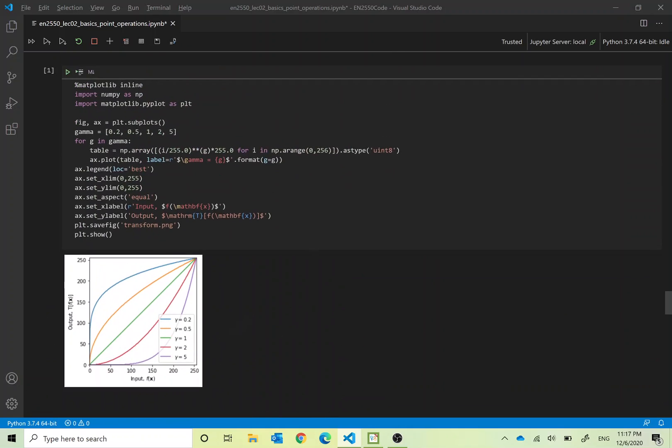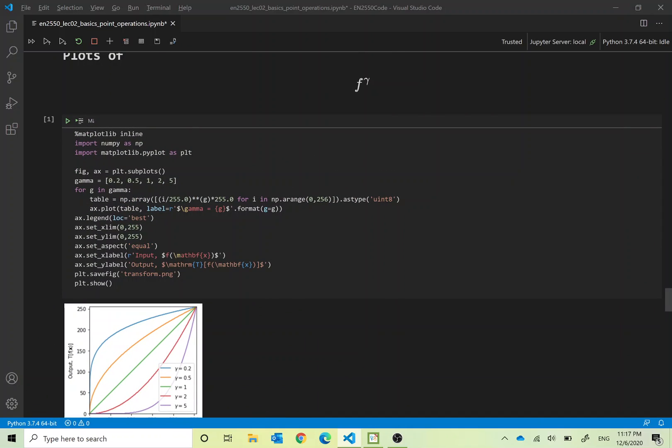We can import the libraries that we want, matplotlib, numpy and so on. Then we can have several gamma values 0.2, 0.5, 1, 2 and 5 and so on. Then we can take each of these gamma values and create this table.